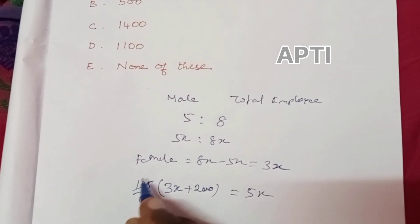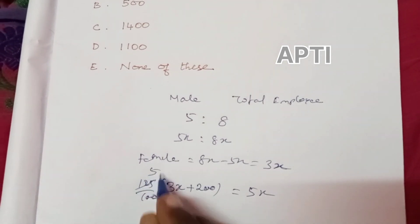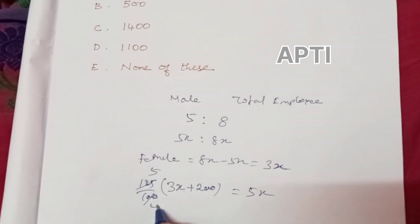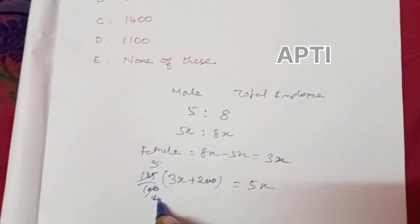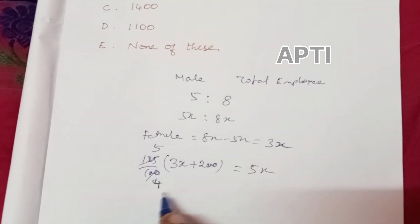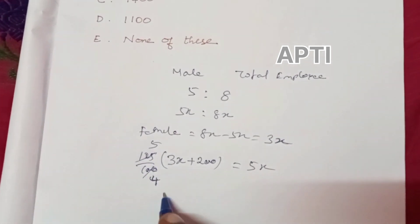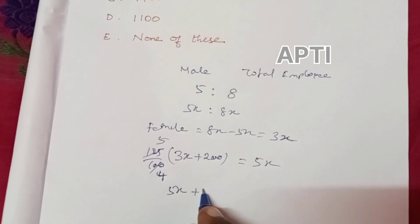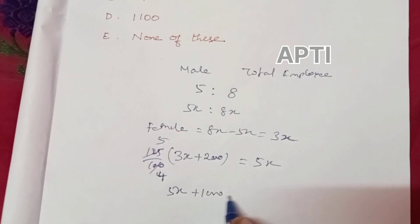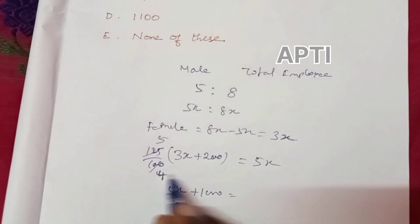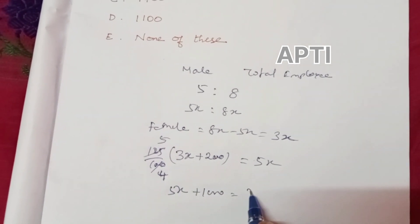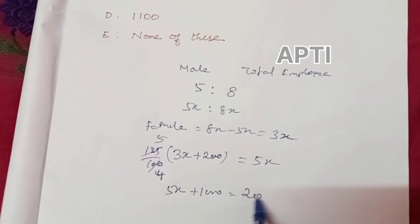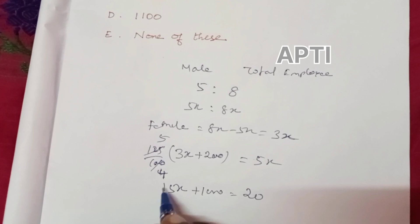So male employees equal 5 times female employees divided by 4. Setting up: 5x equals 5 over 4 times (3x plus 200), giving us 5x times 4 equals 5 times (3x plus 200), so 20x equals 15x plus 1000.